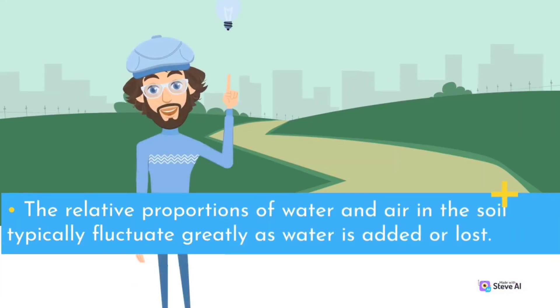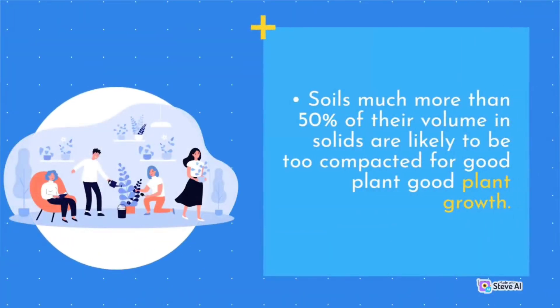The relative proportions of water and air in the soil typically fluctuate greatly as water is added or lost. Soils with more than 50% of their volume in solids are likely to be too compacted for good plant growth.